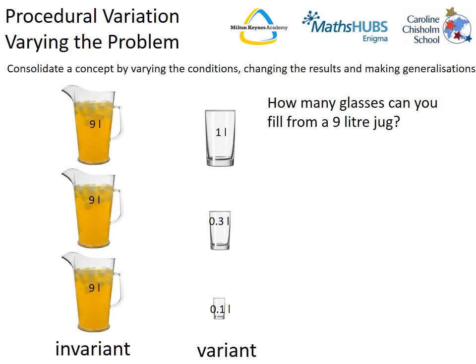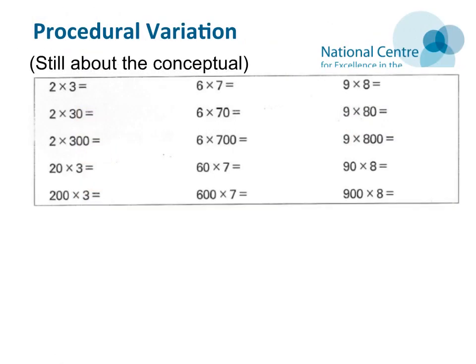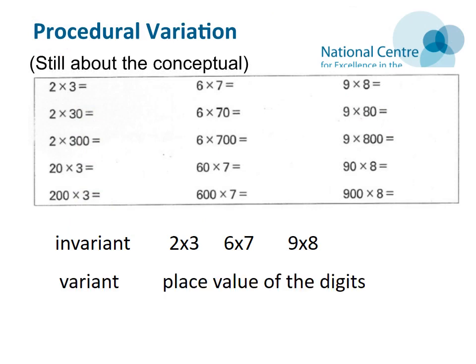We would be good at teaching methods for dividing a whole number by a decimal, but we would tend to introduce it by using unconnected examples and just focus on that method. Because here the jug is remaining constant, children can see for themselves that dividing by a number smaller than one actually results in a larger number, and they've got the understanding of why. Similarly, because the non-zero digits are remaining the same — the two and three, the six and seven, the nine and eight — it is really highlighting to students the effects of place value when doing multiplication.